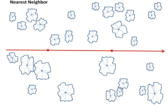A more preferred method is the nearest neighbor method. We start at our sample point and locate the plant closest to that sample point — this is called the focal plant. We then measure the distance from the focal plant to its nearest neighbor. We repeat this process for the next sample point, locating the focal plant and measuring the distance to its nearest neighbor.